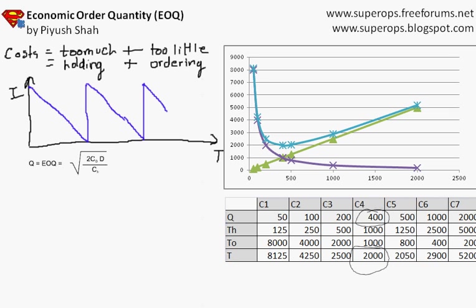EOQ means economic order quantity is the square root of two times the cost of ordering or cost per order into the yearly demand divided by the cost of holding per unit per year. So now let's try and create this formula. We have some data which we'll use from the numerical which we saw. The yearly demand was 4000 units, the cost of ordering was rupees 100 per order, cost of holding 5 per year.